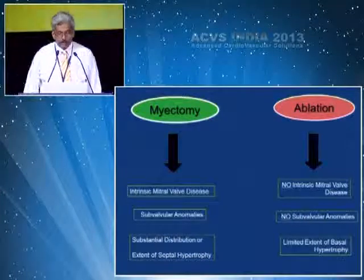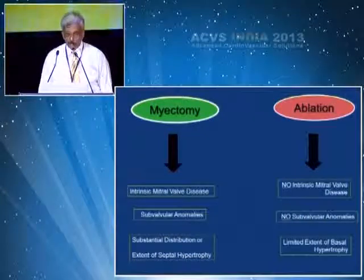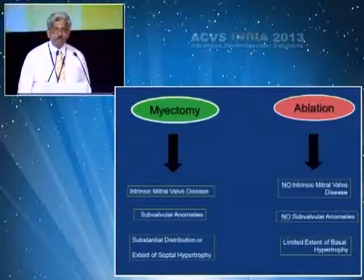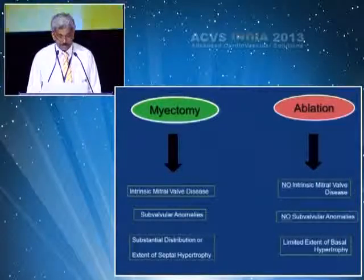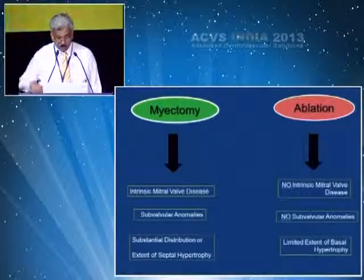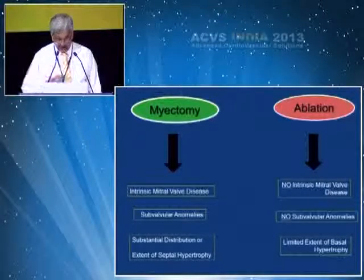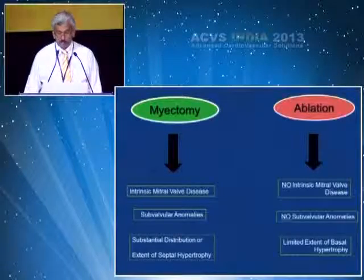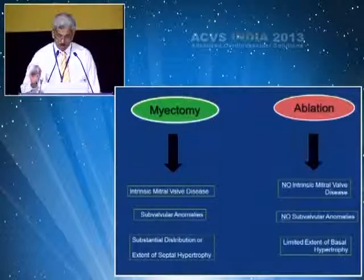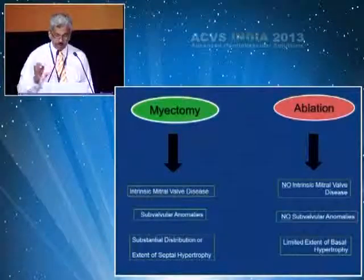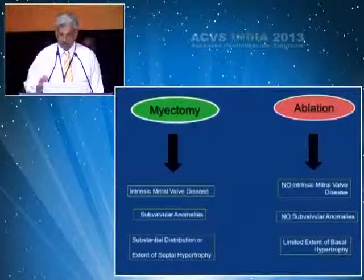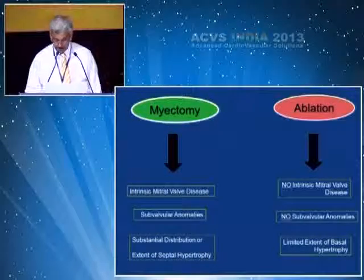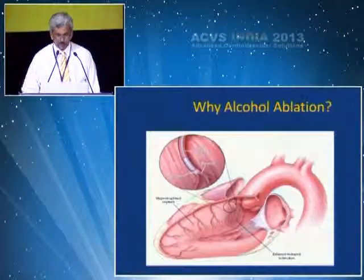You have two ways of treating this problem. Myomectomy is preferred for patients with intrinsic mitral valve disease, subvalvular anomalies, and substantial or extensive septal hypertrophy. Ablation is preferred for patients with no intrinsic mitral valve disease, no subvalvular anomalies, and limited extent of basal hypertrophy.